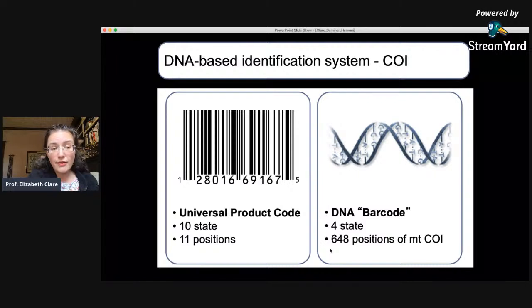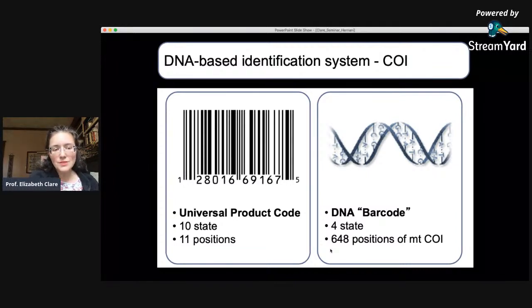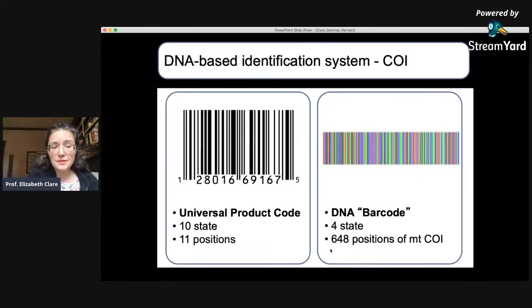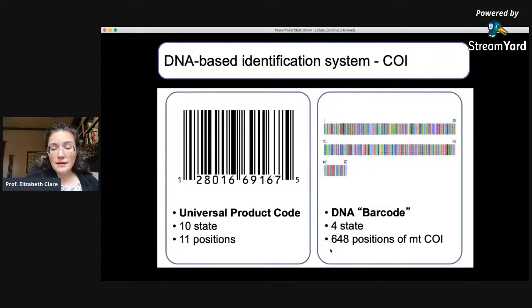A DNA barcode was metaphorically designed to do the same thing — you could look at a tiny fragment of DNA, sequence it, and it should link you to a database of all the information you'd want to know about that species. Its taxonomy was part of that, but the other idea was that you would digitize its ecology, so that anybody anywhere could use it like a field guide to identify what it was and learn about it. It was first conceptualized as a colorful illustrated barcode based on the A's, C's, T's and G's that make up DNA.